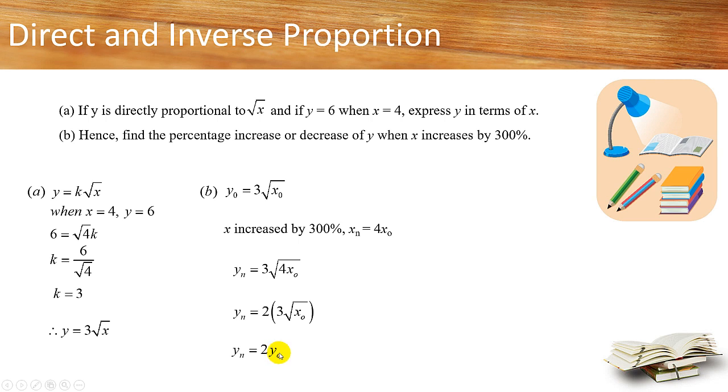Can you understand? In other words, when x increases by 300%, the final value of y will be simply just 2 times the starting value of y. But is this the answer? No, because they want the percentage increase. Obviously this is an increase, it can't be a decrease. So to find the percentage increase, we take the final value of y minus the starting value of y, then divide by the starting value of y, times 100%.